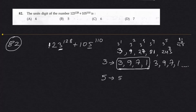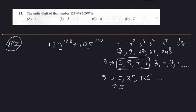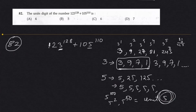For the digit 5: 5 power 1 is 5, 5 power 2 is 25, 5 power 3 is 125. In all these cases the unit digit is always 5. No matter what power you give — 100 or 250 — the unit digit will always be 5 for the number 5.